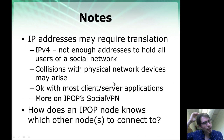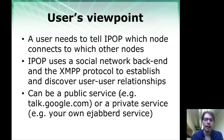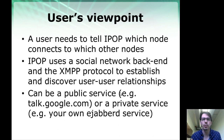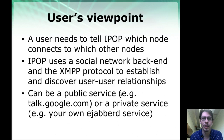Another question is: in this example, two endpoints want to talk to each other, but somebody has to tell those two nodes that they should communicate. IPOP uses a social network backend and the XMPP protocol to establish and discover which devices should communicate with which other devices. That can be a public service like a public XMPP service from Google, or it could be your own online social network — for example, an XMPP server using the eJabberd open-source XMPP service.